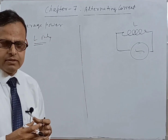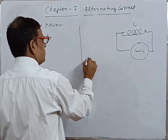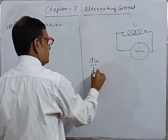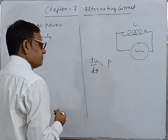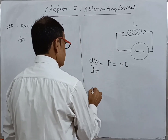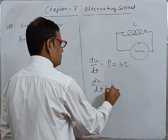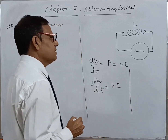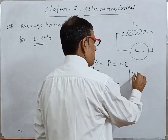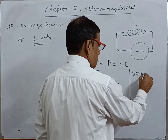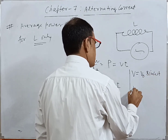Let us begin with the instantaneous power — the formula dW/dt. Work done per unit time is power. Power means V into I. So dW/dt is equal to V into I. In an AC circuit containing L only, let the AC voltage V be equal to V₀ sin(ωt).